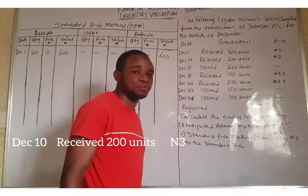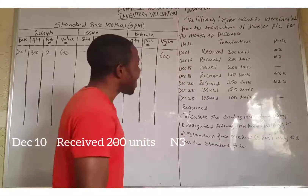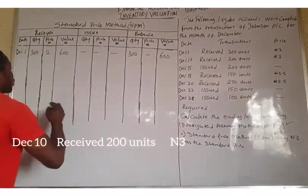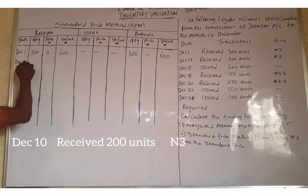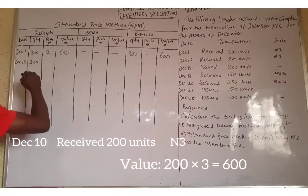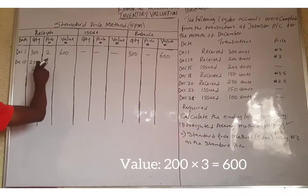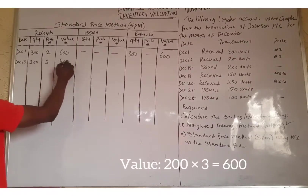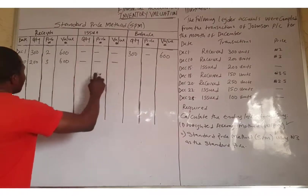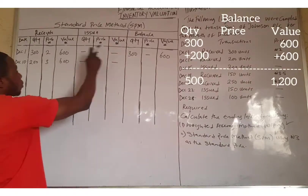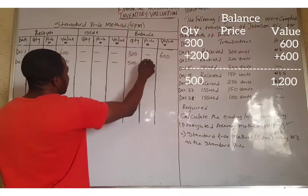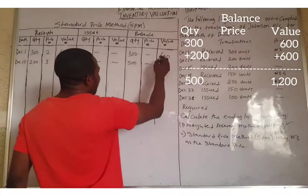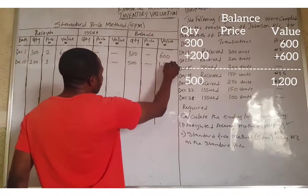On December 10, they received an additional 200 units at a price of ₦3. 200 times 3 equals ₦600. There is no issue on that day, so we add to the previous balance: 200 units plus 300 units equals 500 units. And ₦600 plus ₦600 equals ₦1,200.